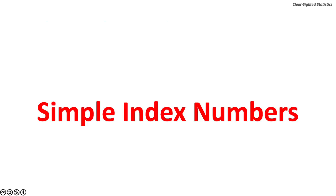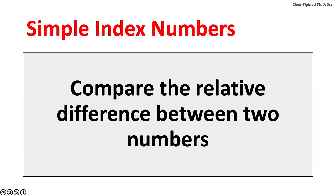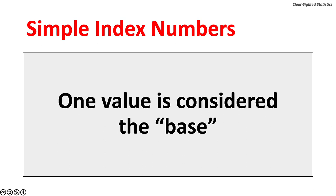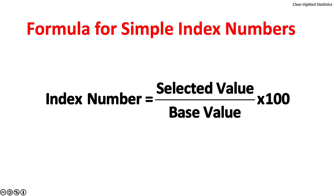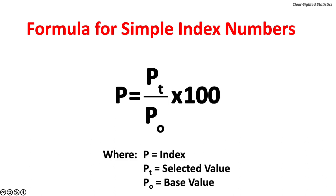Simple index numbers compare the relative difference between two numbers, where one value is considered the base. The formula for simple index numbers is: the index number equals the selected value over the base value, multiplied by 100. In symbolic form, the index number is p, the selected value is p-sub-t, and the base is p-sub-o.